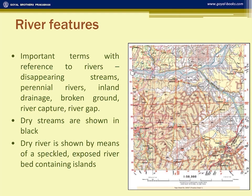Inland drainage refers to rivers that do not go out — they remain within the area but do not meet the main river. These are called inland drainage. Undefined streams are shown in dotted dash or dot-dash lines on the map.